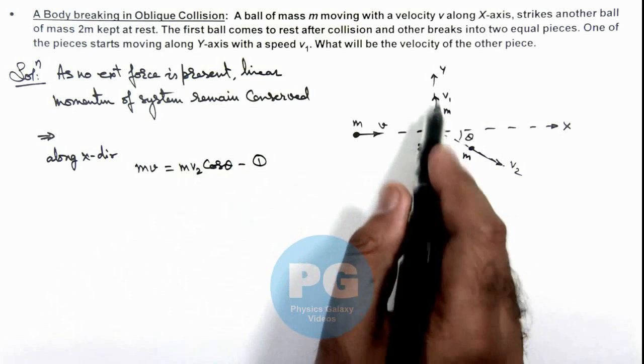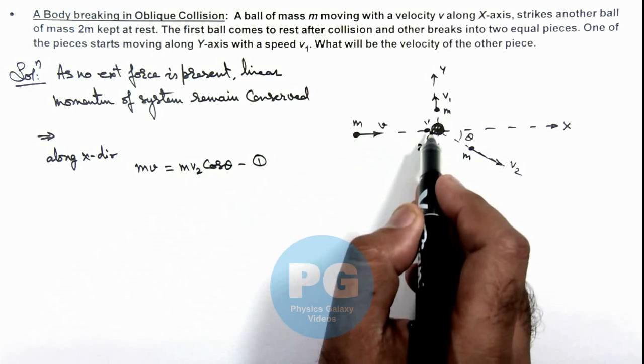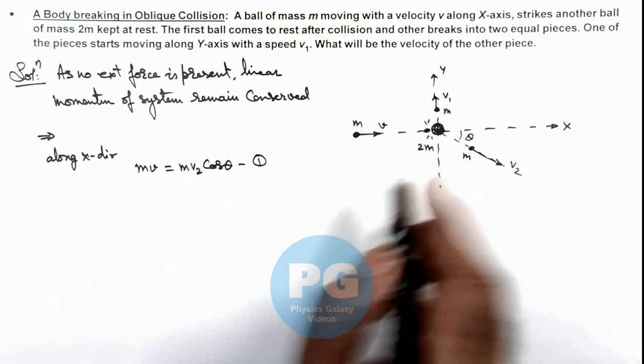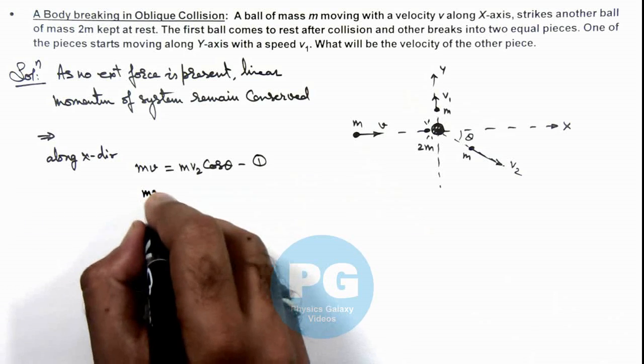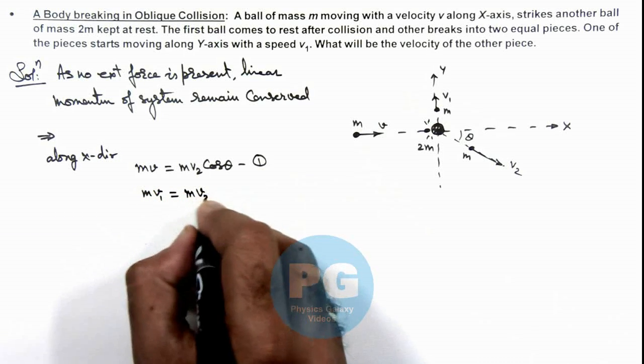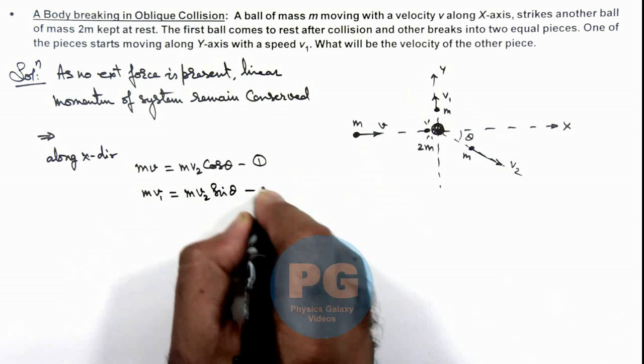And in y direction initially there was not any momentum in the system so after collision total momentum must be zero. So in y direction, mv1 must be equal to mv2 sine theta, which is say our equation 2.